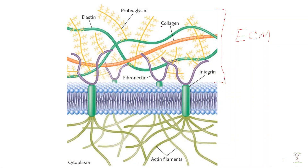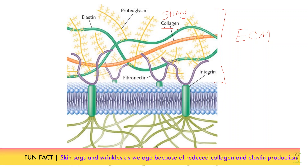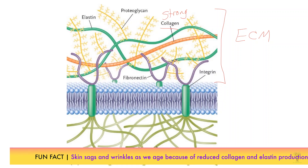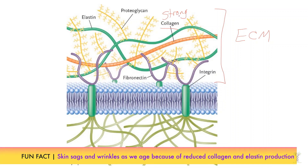First we have collagen. Collagen is a protein that makes tissues strong. We have a lot of collagen in connective tissues such as bones, skin, cartilage, and ligaments — tissues that need to be very strong.